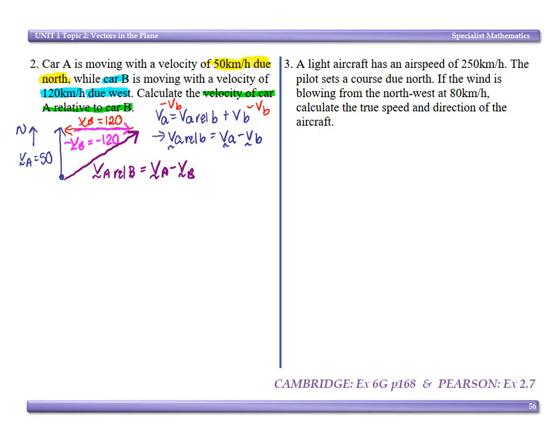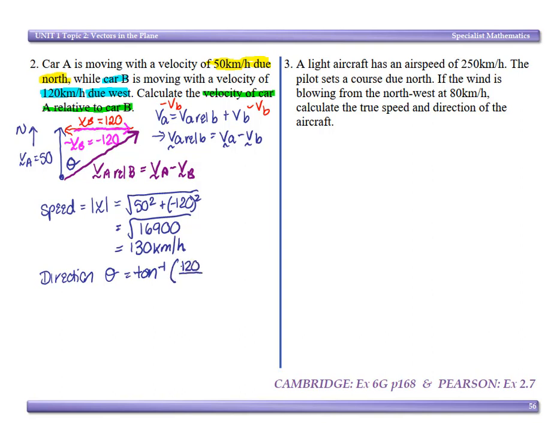Okay, so we've proven it with a diagram. Now speed is the magnitude of our velocity, so that's going to be the square root of 50 squared plus negative 120 all squared. That's the square root of 16,900, which is 130 kilometers an hour. Now remember, speed is the magnitude of velocity. Our direction theta is going to equal inverse tan, our opposite is 120, our adjacent is 50. That's approximately 67.38 degrees.